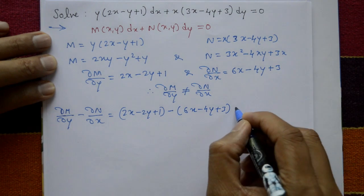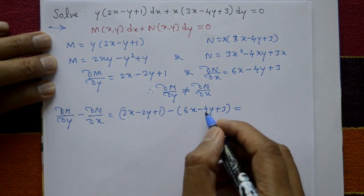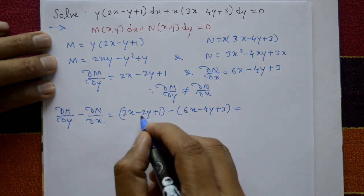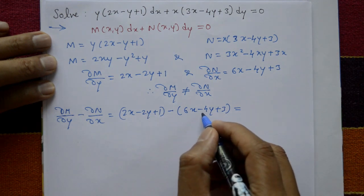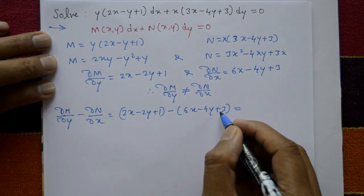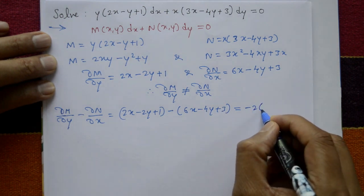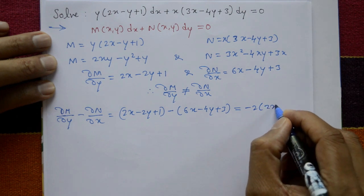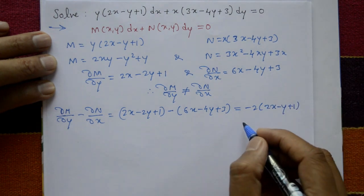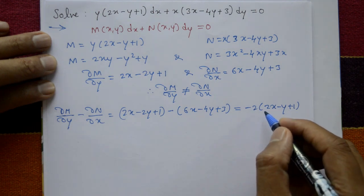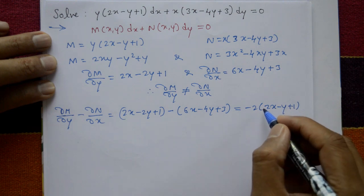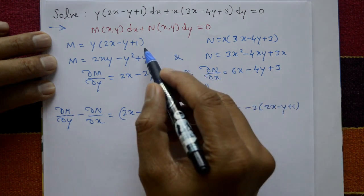This difference equals -4x + 2y - 2, which simplifies to -2(2x - y + 1). Notice this is close to M = y(2x - y + 1).